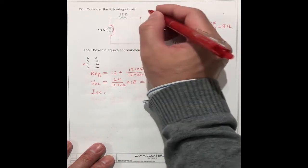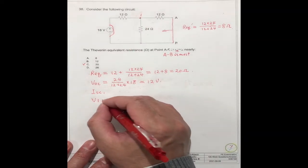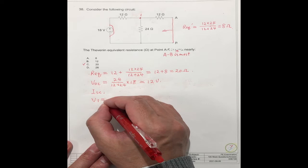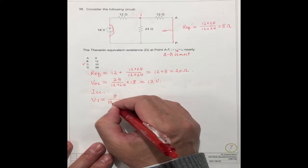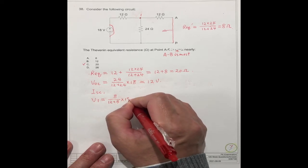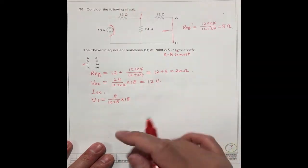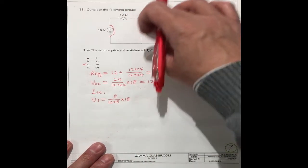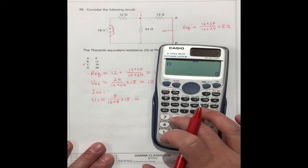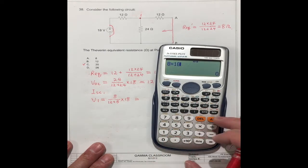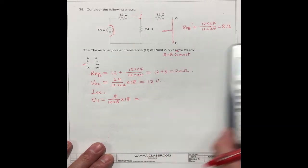We can find this voltage. I call this as V1. V1 equal to 8 divided by 12 plus 8 times 18. Because we only need this voltage between the 24, between the two resistors. It is equal to 8 times 18 divided by 20. This is 7.2 volts.